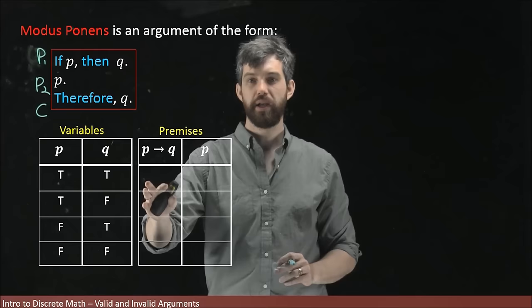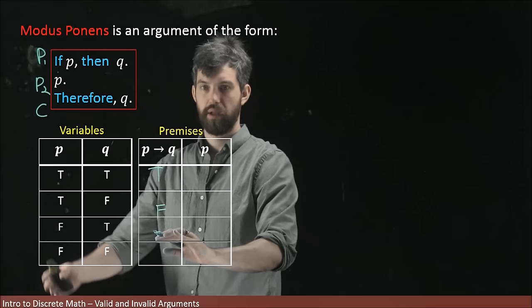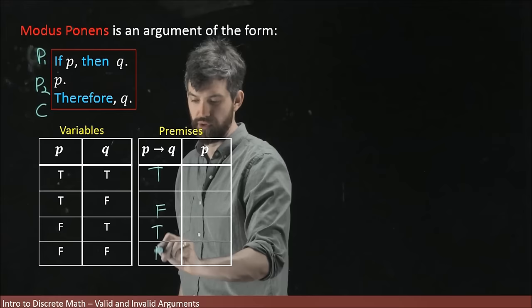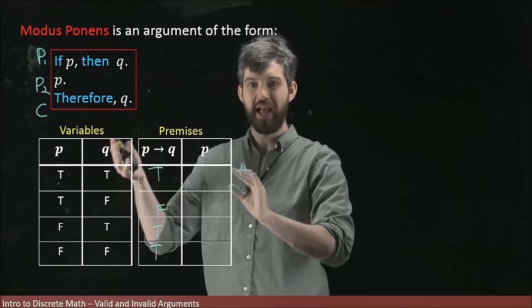So first of all, the P implies Q. We know true, true. This is going to give us a true as well. Then we're going to have true, false. That's going to be false. And then I have these two false down here in the P column. And so we got the vacuously true scenarios. So I can put true, true in there as well. And then I'm sort of just repeating myself. I've also put P because P was a premise. But P was also a variable. So I'm going to kind of just copy and paste this particular column. So it's a little bit tedious, but whatever. That's all right.